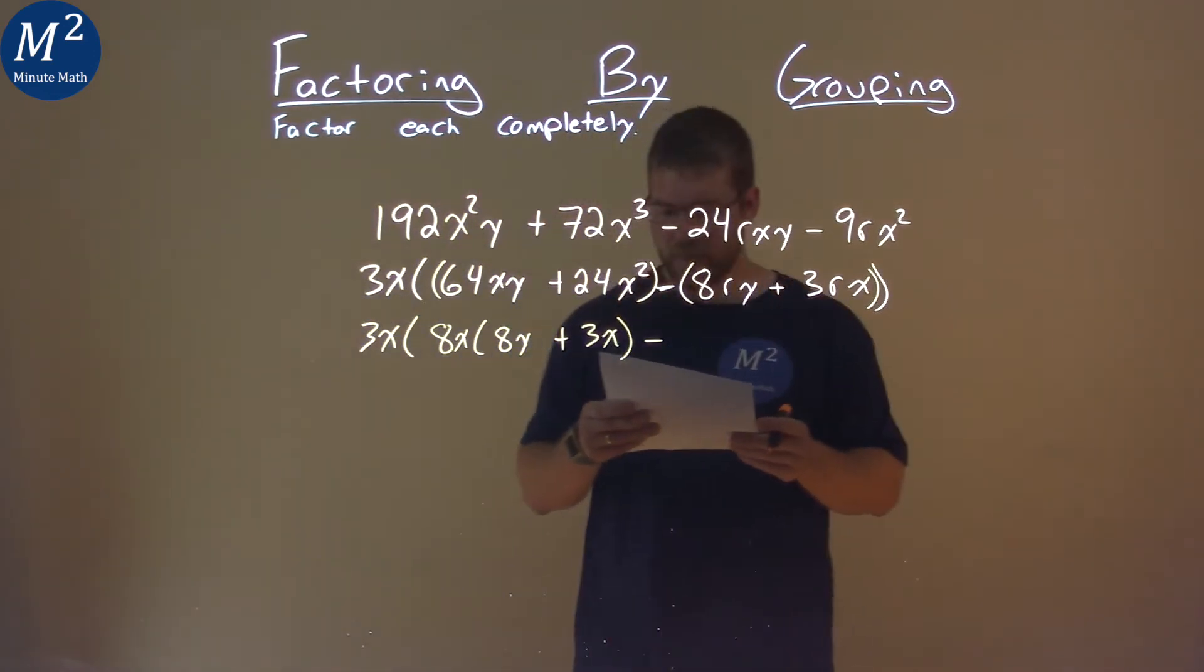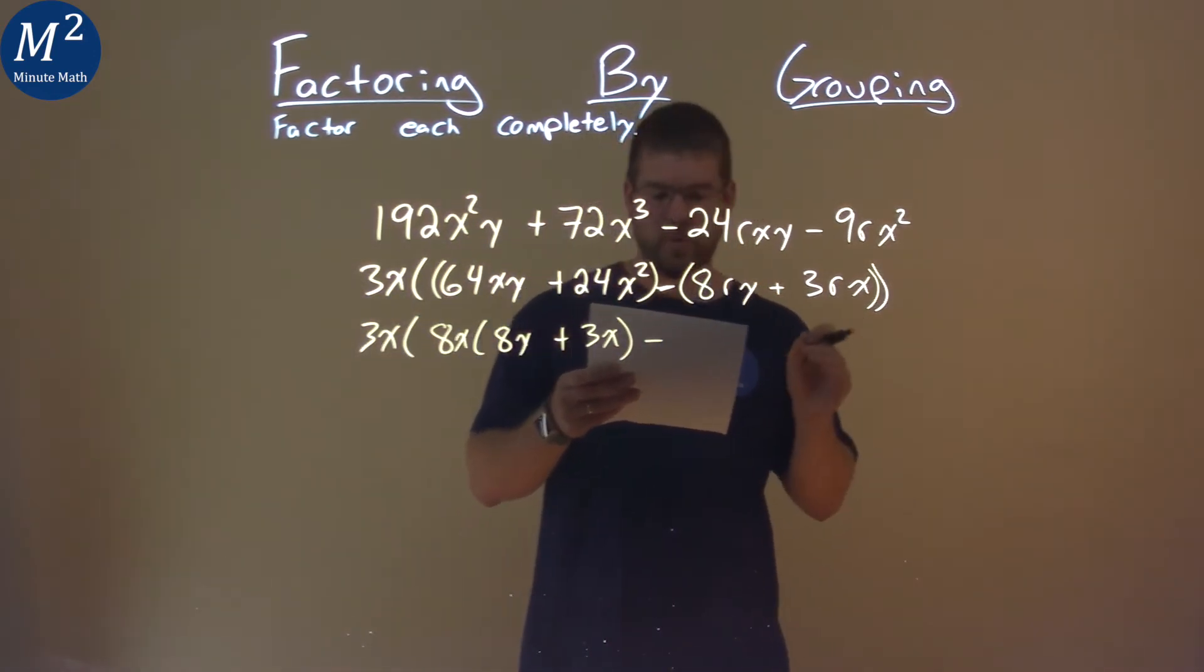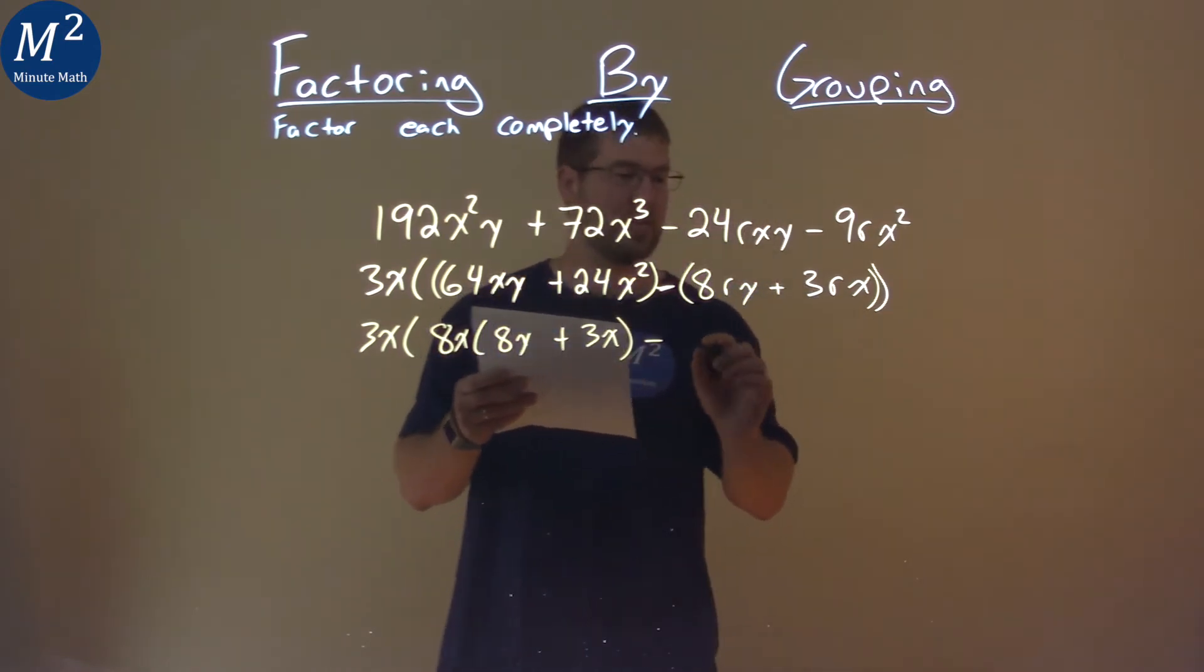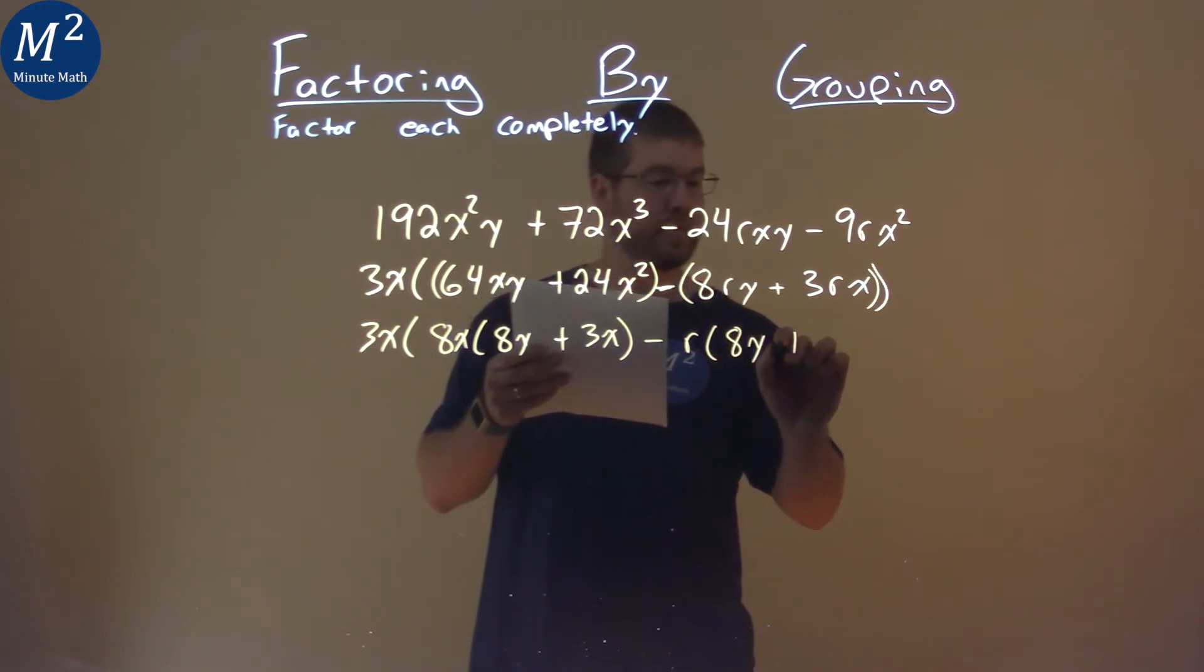I'm going to do the same thing here. A common term in 8ry and 3rx is just the r. So I put an r, I'm left with an 8y plus a 3x.